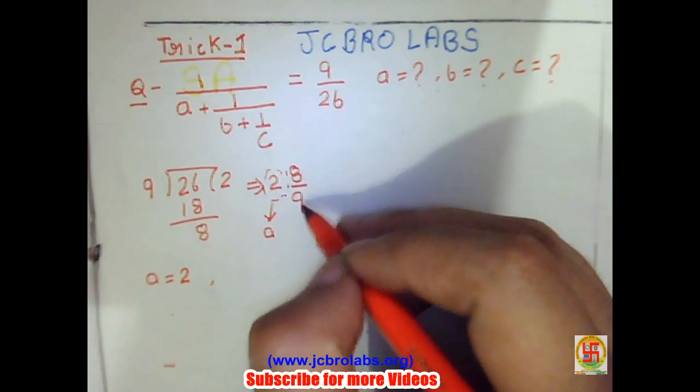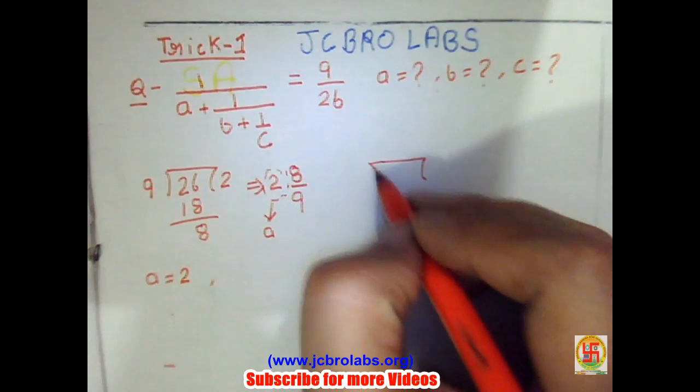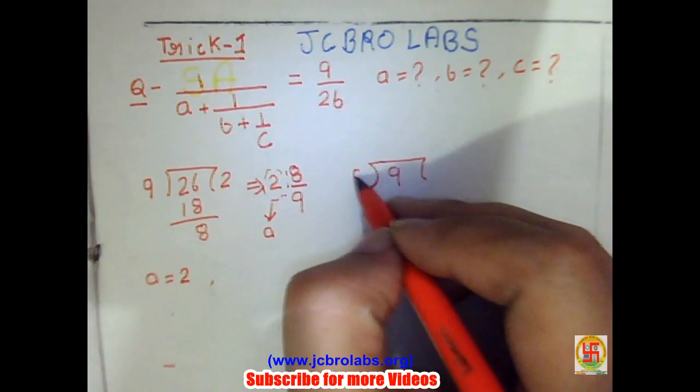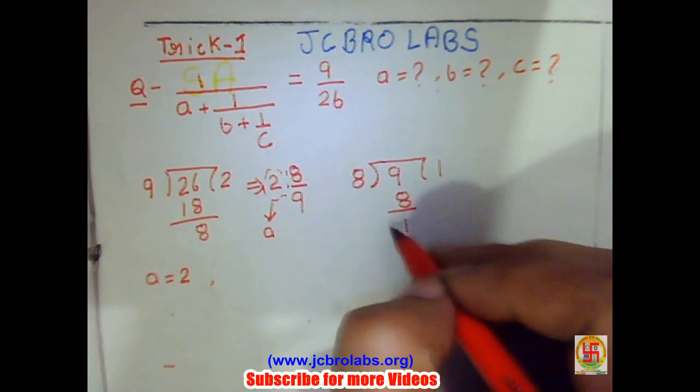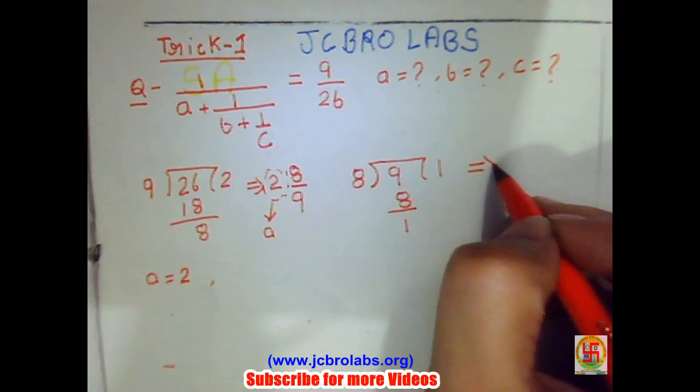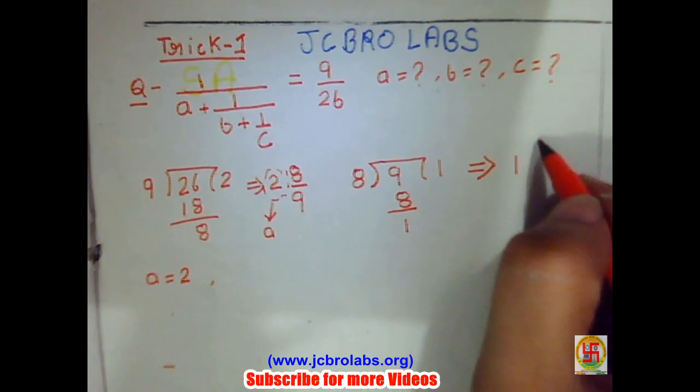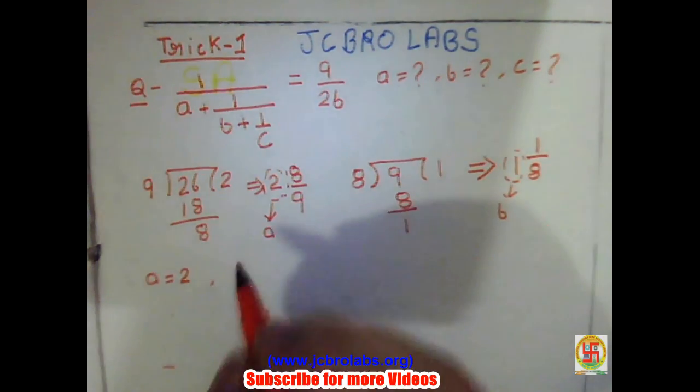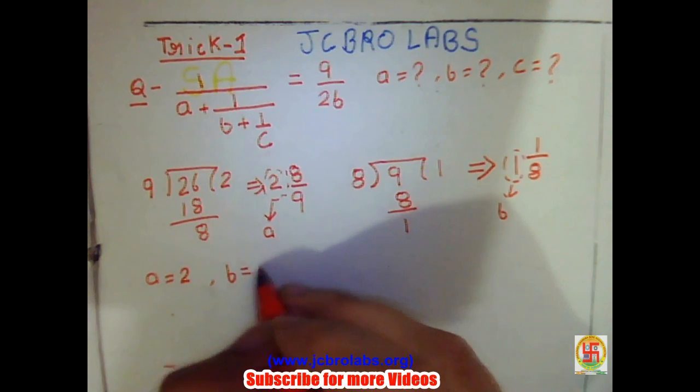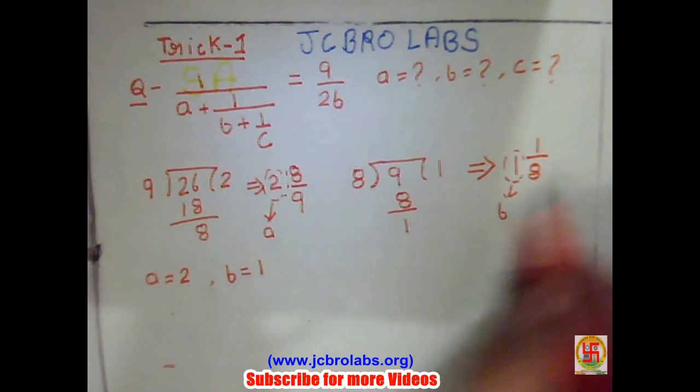Now we are left with 8 and 9. Take 9 inside and divide it by 8. 8 ones are 8, remainder 1. So this quantity can be written as 1 + 1/8. This is another value, b equals 1.